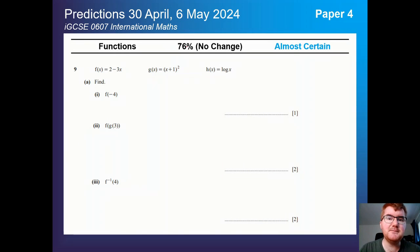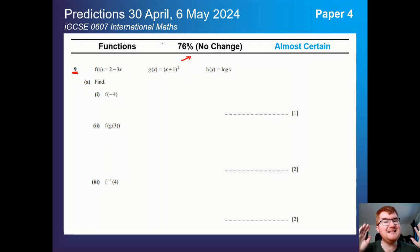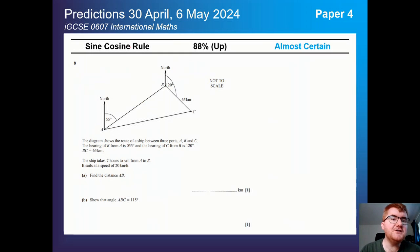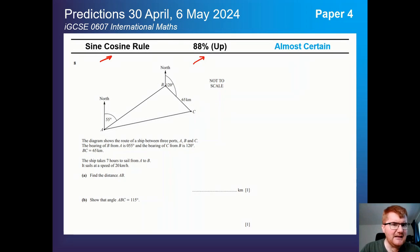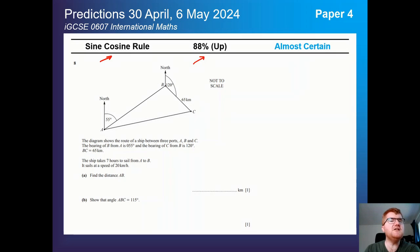On to functions — also 76%, no change. If it does come up, it comes up in a big way, so even though it's three quarters of the time, you need to revise this because it will be a ton of marks on paper 4. On to the sine and cosine rule, which is up at 88% — much more important than it has been, particularly in the last couple of years. A very typical question involves bearings where you need to work out sides using the sine rule and cosine rule effectively. Alongside probability, this is one of the key topics you really need to know.